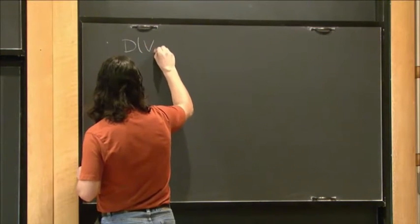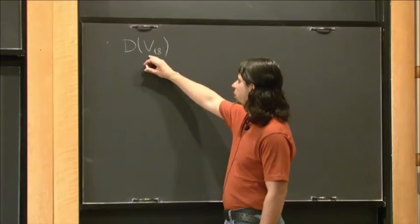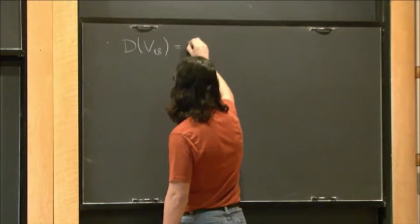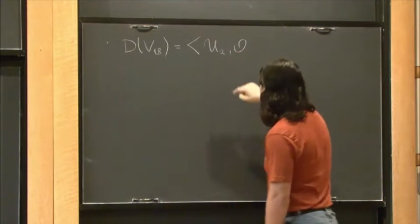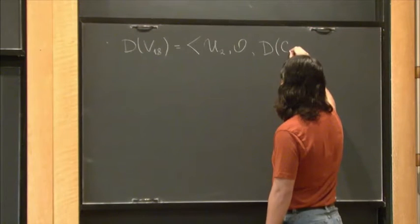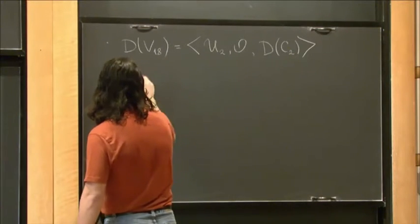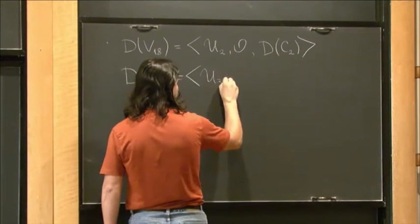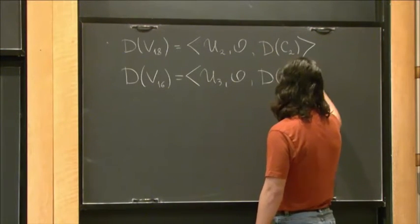For a Fano threefold of degree 18 with Picard number 1, one can check that it has a semi-orthogonal decomposition with two exceptional objects — one is a rank-2 vector bundle, another is the structure sheaf — and the remaining part is the derived category of a genus-2 curve. Similarly, for a Fano variety of degree 16, there is a very similar semi-orthogonal decomposition with a rank-3 vector bundle, the structure sheaf, and derived category of a curve of genus 3.